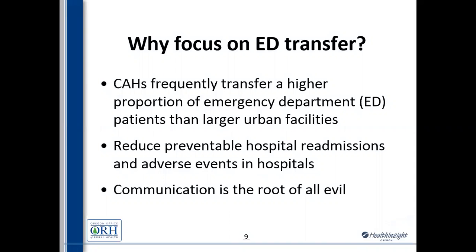Communication problems are a major contributing factor to adverse events in hospitals, accounting for 65 percent of sentinel events tracked by the Joint Commission. Transfer patients are also excluded from calculation in most national quality measures, like those on Hospital Compare. This is why critical access hospitals have their own specific measure — so that these important transitions don't go unmeasured.